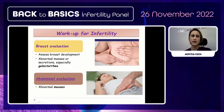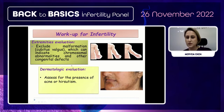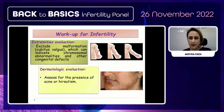Abdominal evaluation should exclude malformations that can indicate chromosomal or congenital abnormalities. Dermatologic evaluation is very important — looking for acne, hirsutism, signs of polycystic ovary syndrome, congenital late-onset adrenal hyperplasia, and Cushing syndrome. These kinds of dysfunctional hormonal problems can sometimes be identified just by examining the patient's face.